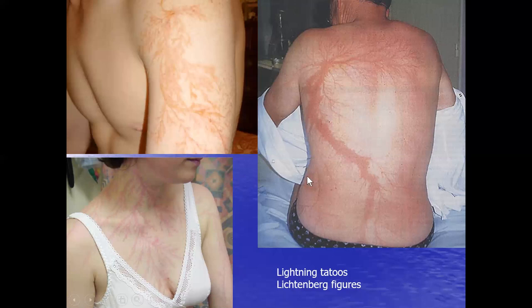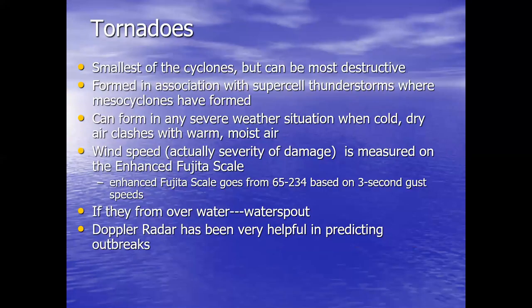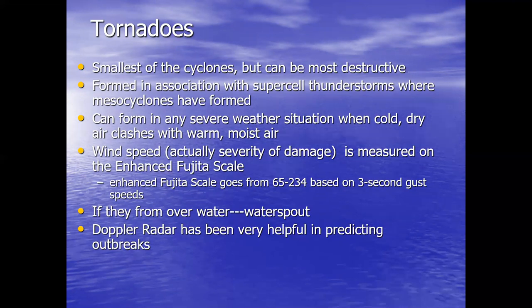So on to tornadoes. Tornadoes are the smallest of these low pressure systems or cyclones, but they can be the most destructive. They're formed in association with supercell thunderstorms where mesocyclones have formed. A supercell thunderstorm is one of these very violent thunderstorms that have internal circulation in them. They can form in any severe weather situation where cold dry air is going to clash with warm moist air.